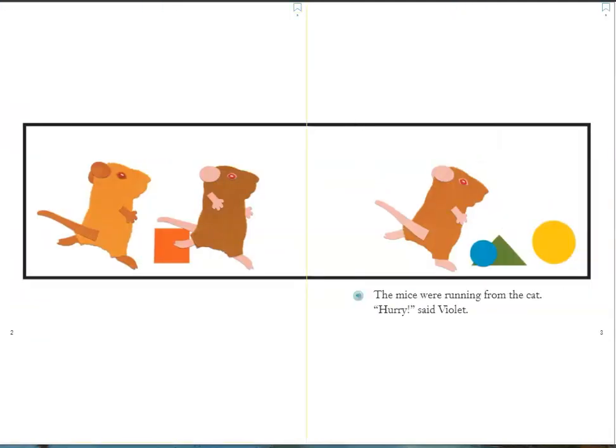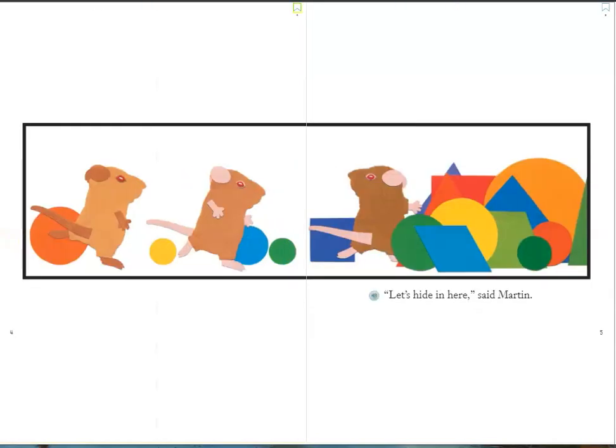The mice were running from the cat. "Hurry," said Violet. "Let's hide in here," said Martin.